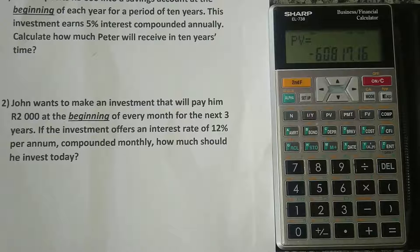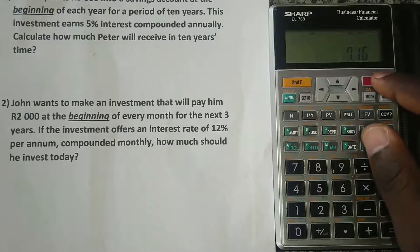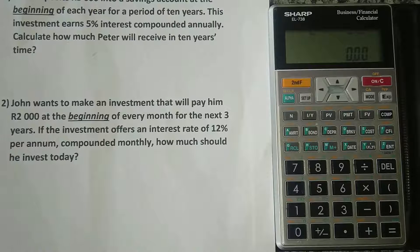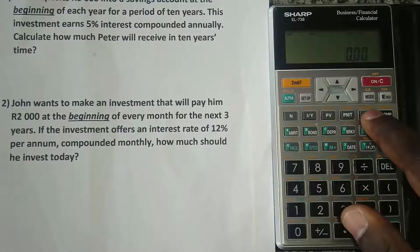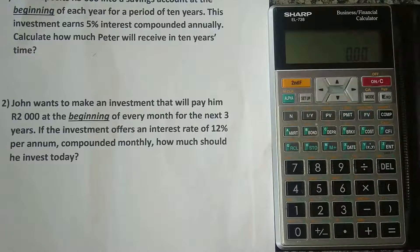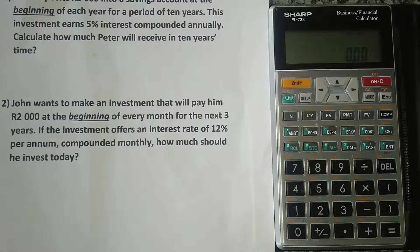Once you're done with your calculations, do not forget to put the calculator back to end mode. If you forget and do other ordinary annuity calculations, you will definitely get the wrong answers — students make that mistake a lot. So press second function again and press FV to switch back from beginning to end mode. I hope you've gained value from this lesson. Please subscribe to our channel, like this video, and share it with those you think it might help. Till next time — cheers!